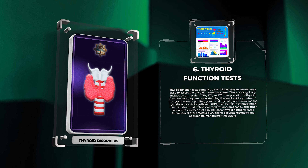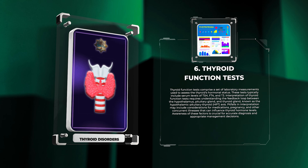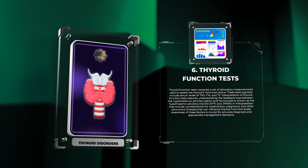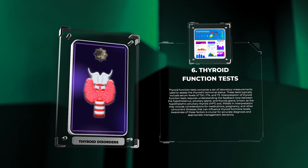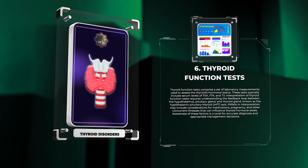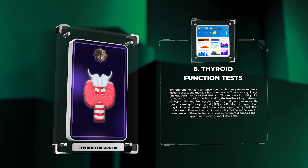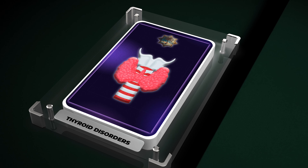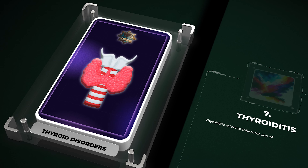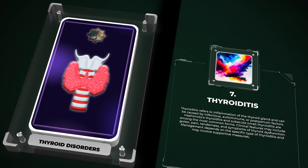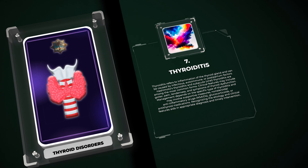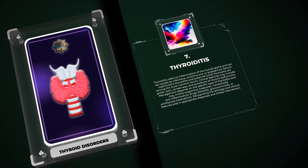Thyroid function tests comprise a set of laboratory measurements used to assess the thyroid's hormonal status, typically including serum levels of TSH, FT4, and T3. Interpretation requires understanding the feedback loop between the hypothalamus, pituitary gland, and thyroid gland, known as the hypothalamic-pituitary-thyroid (HPT) axis. Pitfalls in interpretation may include the influence of medications, pregnancy, and concurrent illnesses on thyroid hormone levels, making awareness of these factors crucial for accurate diagnosis.